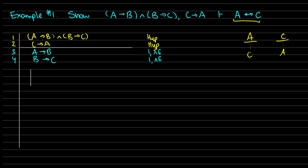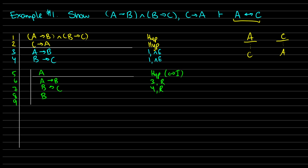At this point we can start a sub proof. I'm going to start my first one with A — with this we have to prove C. So this is a hypothesis, and I'll note biconditional introduction just to keep track of why I'm doing this. I'm going to reiterate A arrow B and B arrow C — this was from lines 3 and 4 — because I want to use these in the sub proof. So in line 8, I have A and A arrow B, which gives me B via modus ponens. Then in line 9, I'll use B arrow C and B to get C — that's from lines 7 and 8 and is also modus ponens. So if we assume A, then we get C.